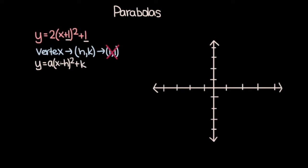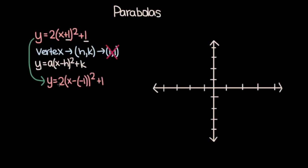In the general form we have x minus a constant whole squared, but in the equation we're working with we have x plus a constant whole squared. So let's rewrite this as y is equal to 2 times x minus negative 1 whole squared plus 1. This equation is the exact same because the negative of negative 1 is just plus 1. When you write it in this format, it becomes clear that h is negative 1 and k is 1, so our vertex is at the point negative 1 comma 1.